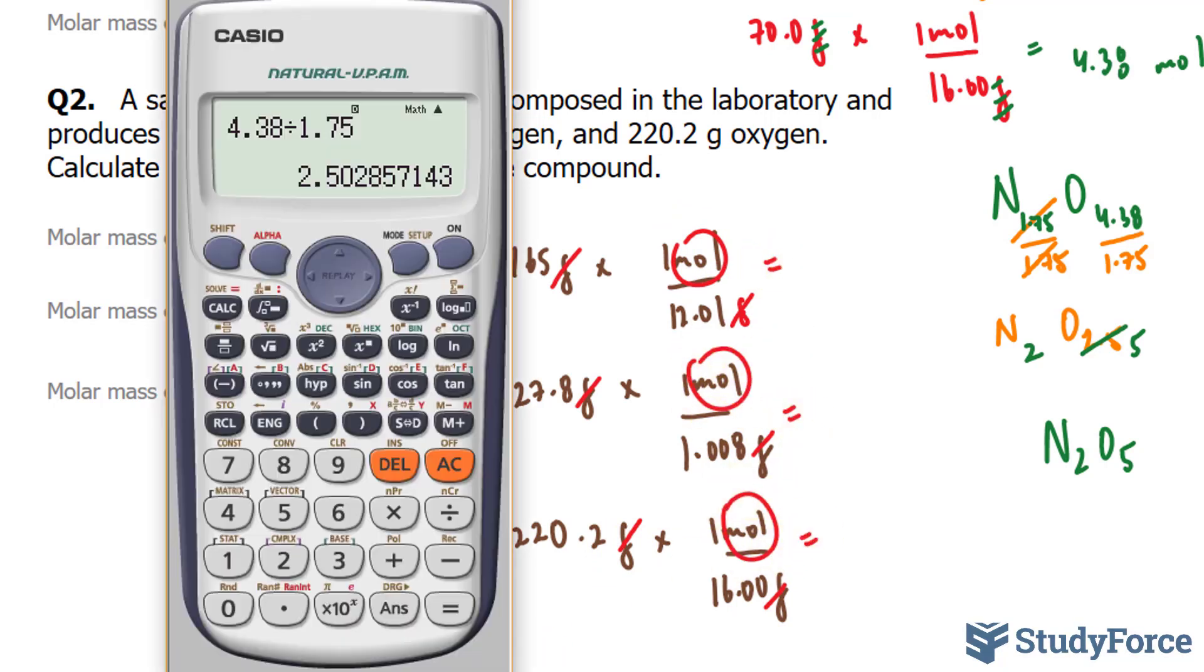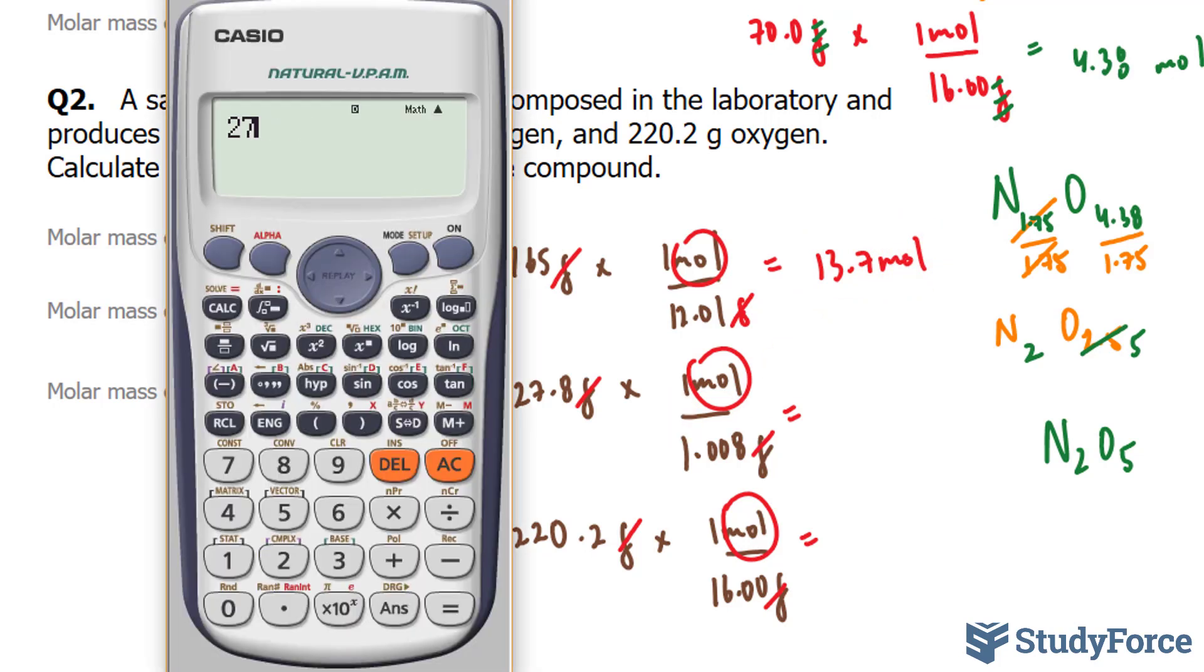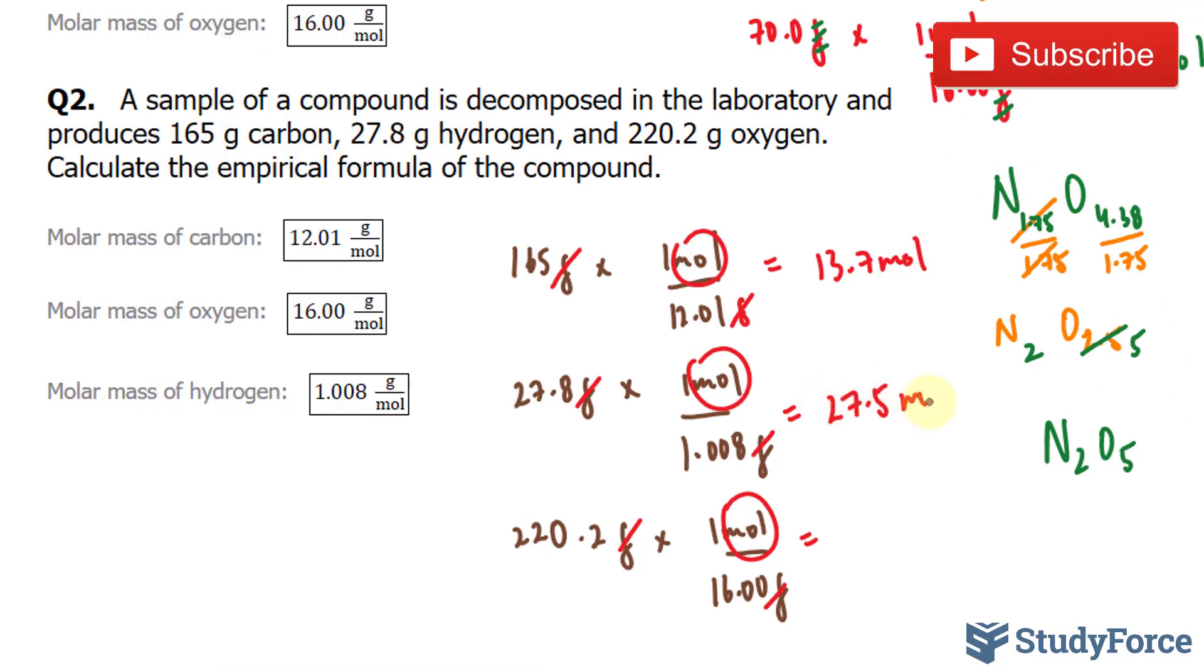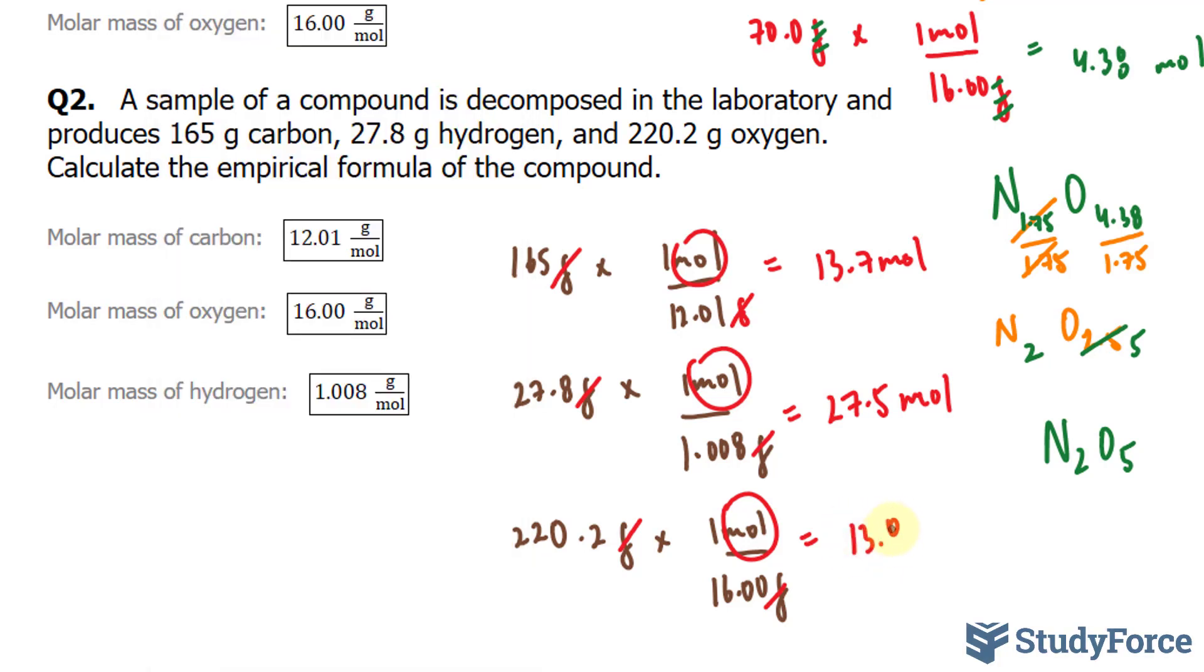Let's see what we get. Using our calculator for the first one, we have 165 divided by 12.01, that's 13.7 moles. Over here we have 27.8 divided by approximately 1, this gives me 27.5 moles. And lastly, 220.2 divided by 16, that gives me roughly 13.8 moles. So I'll write down C, H, and O. Starting with carbon, we have 13.7. Hydrogen, we had 27.5. And oxygen, we had 13.8.